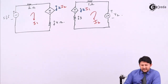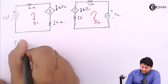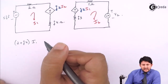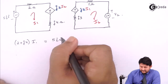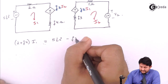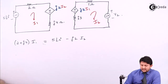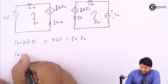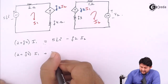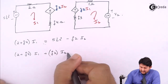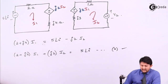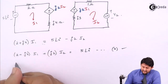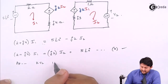Now let's write the KVL equation for mesh 1. Observing the circuit, combining the real and imaginary parts, the impedance is 2 + j4. The current is I1. Applying KVL, the equation becomes: (2 + j4)·I1 + j2·I2 = 5∠0°. This is equation number 1.